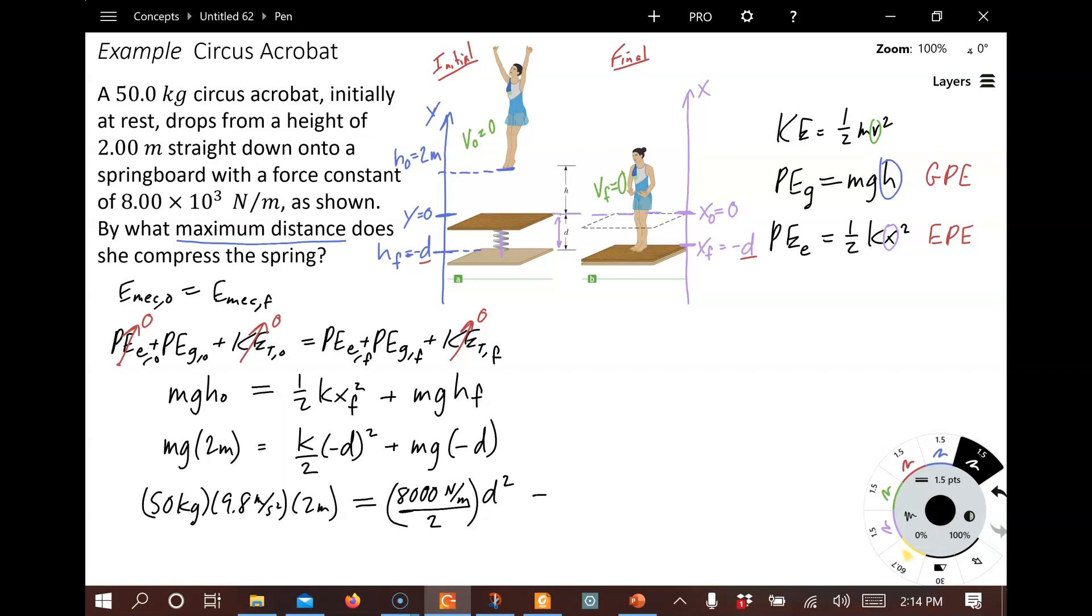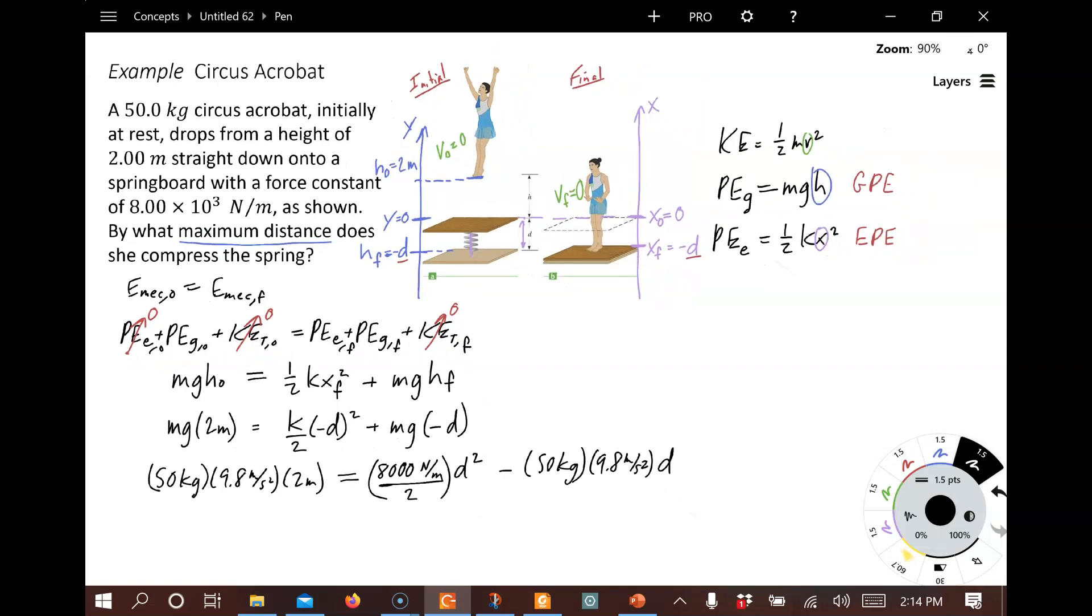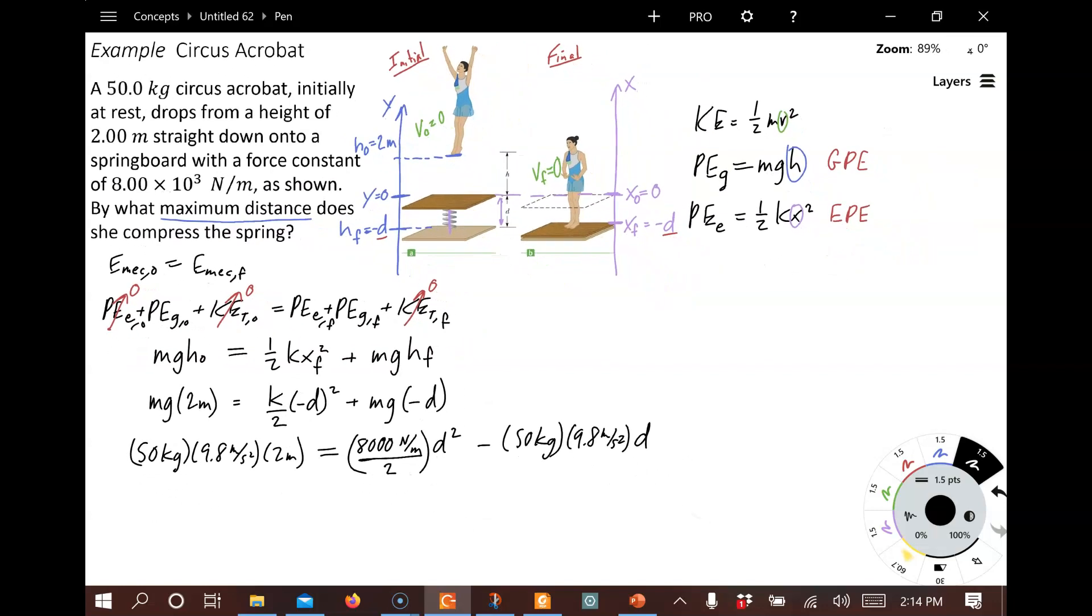And over here, we've got a negative sign. And then we've got the mass, 50 kilograms. We've got G, 9.8 meters per second squared. And we've got D. So we can clean this up a little bit just by calculating some of these values. And let me pause this and write those down.